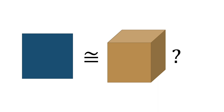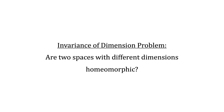One thing I want to make clear is that this question is not just about lines and squares, but about dimension in general. For example, is a square homeomorphic to a cube? Is there a way to reshape the square into a cube? This general question of dimension is called the invariance of dimension problem — whether two spaces with different dimensions are homeomorphic.